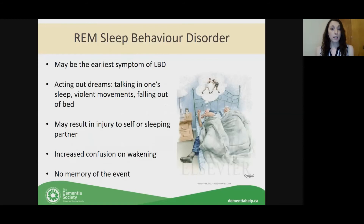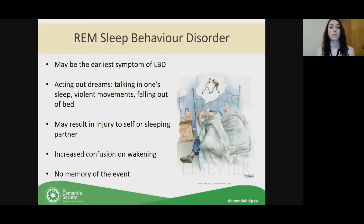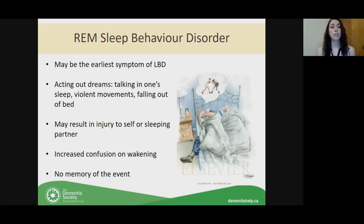One thing that can happen with Lewy body dementia — in over 60 percent of cases — is REM sleep behavior disorder, which can be one of the earliest signs. People act out their dreams. It's different from sleepwalking, which happens in non-REM sleep — this happens when the person is actually dreaming. They really think in the moment, for example, that they're kickboxing. This can result in traumatic events at night — the person can fall out of bed, injure themselves or their sleep partner. They're often very confused when they wake up and won't necessarily remember the event happened.